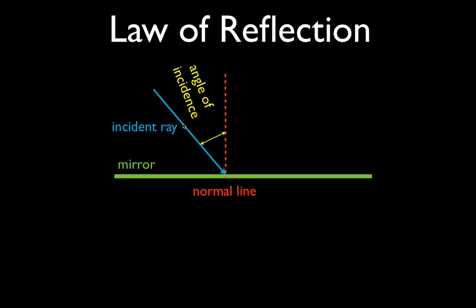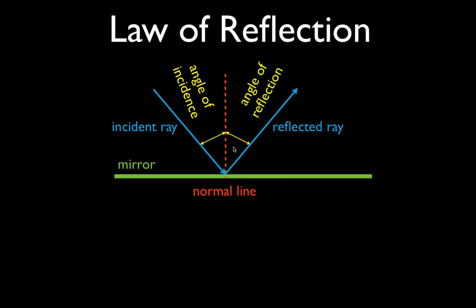We're going to measure this angle and draw the reflected ray so that it reflects at the same angle relative to the normal line. The angle of incidence and the angle of reflection must be equal. So we have all the important parts: our mirror, our incident ray, our reflected ray, our angle of incidence, and our angle of reflection.